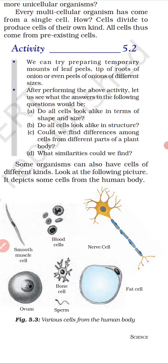Could we find differences among cells from different parts of a plant body? Yes, we could find differences among cells from different parts of a plant body. Leaf cells have different types of functions, so their cell shape and size will be different.